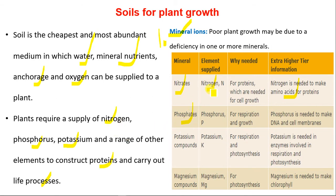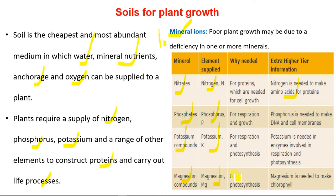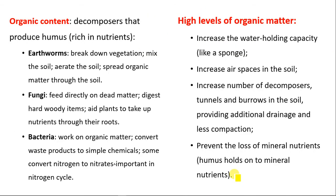Phosphate supplies the element phosphorus, used for respiration and growth; phosphorus is also needed to make DNA and cell membranes. Potassium compounds supply the element potassium, needed for respiration and photosynthesis — specifically in enzymes involved in those processes. Magnesium compounds supply magnesium, needed for photosynthesis as it is required to make chlorophyll, which traps sunlight for photosynthesis.